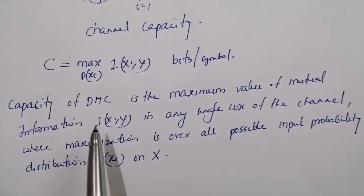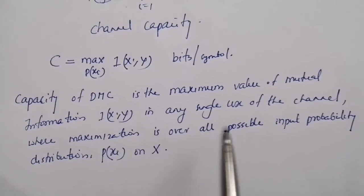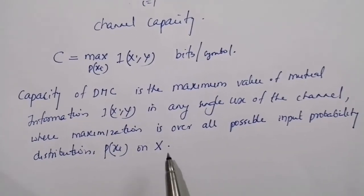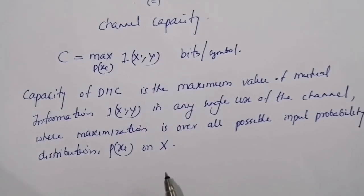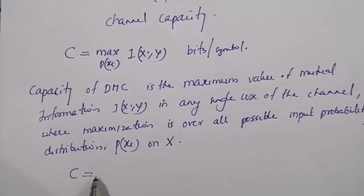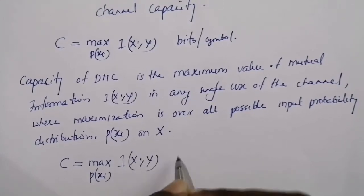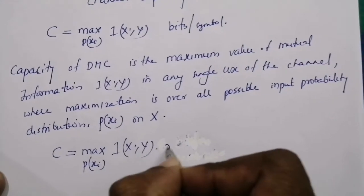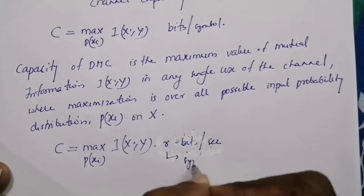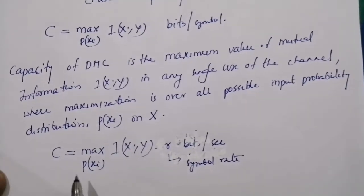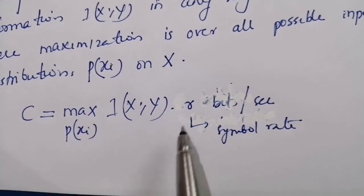Capacity of a discrete memoryless channel is the maximum value of mutual information I(X;Y) in any single use of the channel, where the maximization is over all possible input probability distributions p(xi) on X. So C can be written as max over all p(xi) of I(X;Y) times r bits per second, where r is the symbol rate.